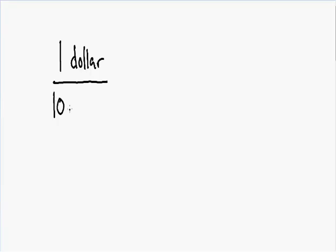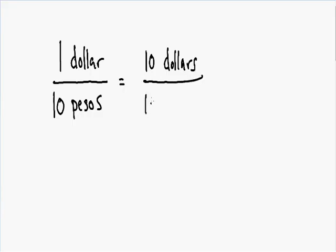Hey everybody. Welcome to my video on proportions. Proportions are just two ratios that are equal to each other. For example, the ratio of $1 to 10 pesos — if you exchange $1 at the airport you get 10 pesos — is exactly equal to $10 to 100 pesos, because these two ratios are proportional. We just multiplied both top and bottom by 10. In this video I'm going to talk about how to solve proportions, and in the last example I'll go over a proportion word problem.